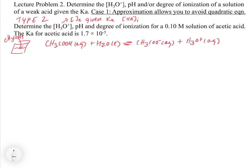Acetic acid is a weak acid — we know that mainly because we're given a Ka for it. The next question is, are there any bases around? Yes, water is present. Are there any other bases? No. All we have in the water is the acetic acid. So the only acid is acetic acid, the only base is water, and that's how I know how to write that equation.